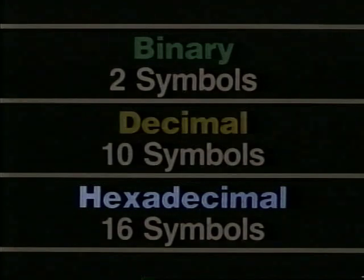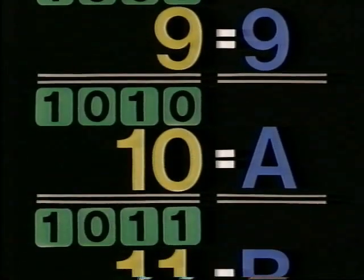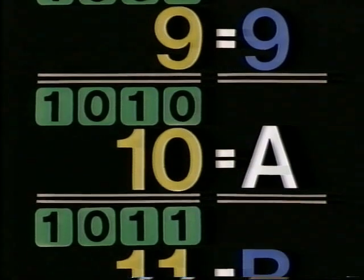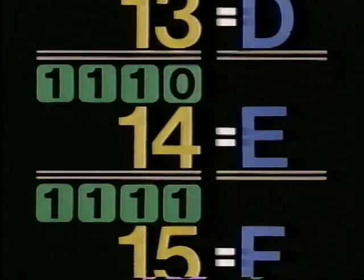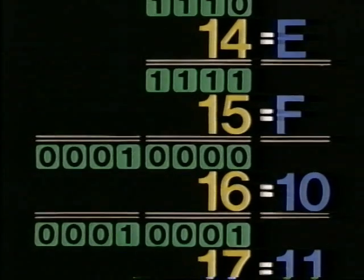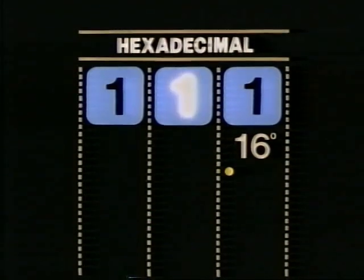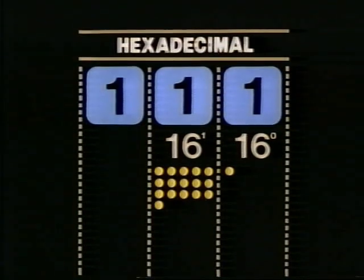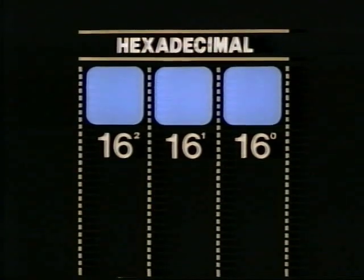Hexadecimal makes binary more manageable. The hexadecimal number system uses sixteen different symbols instead of two or ten. Hexadecimal symbols run from zero to nine, and then continue with A. A represents the decimal value ten. The highest hexadecimal symbol is F, which represents decimal fifteen. The hexadecimal system also uses positional notation. The first position is for sixteen to the zero power, or one. The second is for sixteen to the first power, or sixteen. The third is for sixteen to the second power, or two hundred fifty-six.